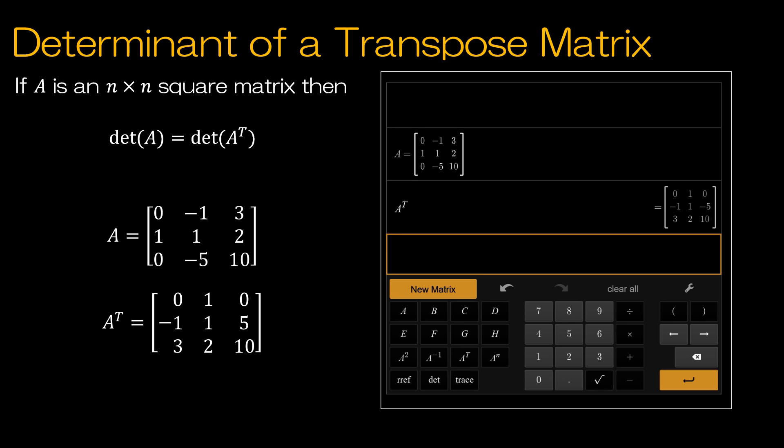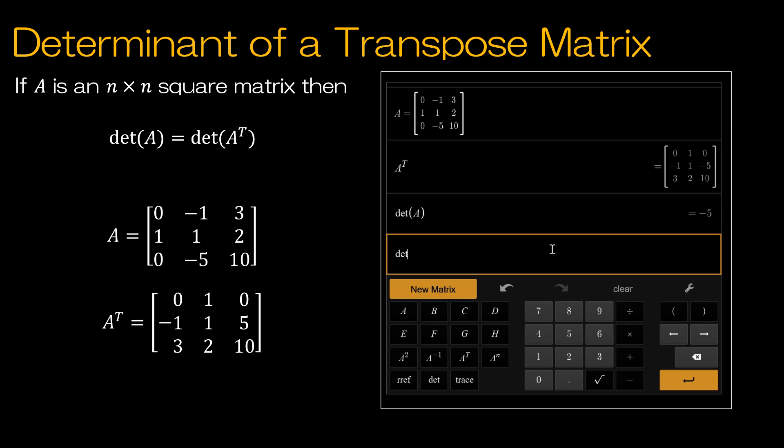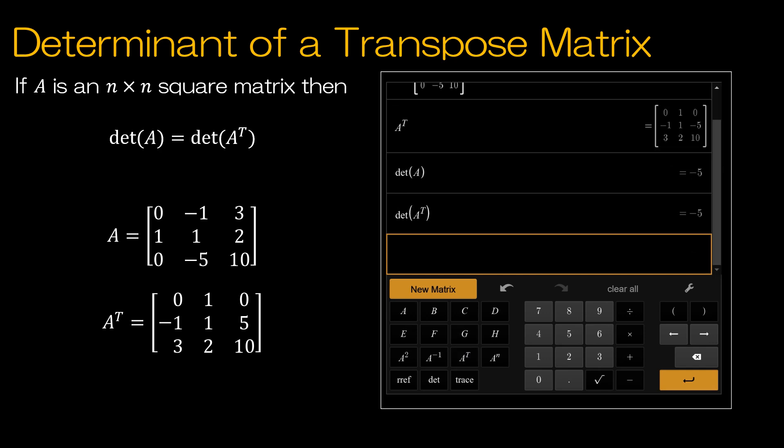Our last property has to do with determinants of transpose matrices. So as you can see, I've got A, and then I've got A transpose. I'm going to find the determinant of A, and I'm going to find the determinant of A transpose. And notice both of those values are the same, exactly as the property said they would be.